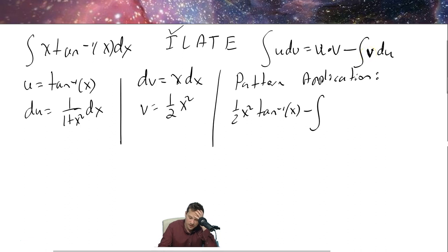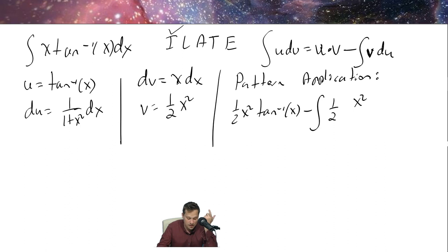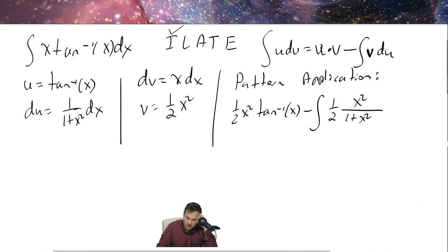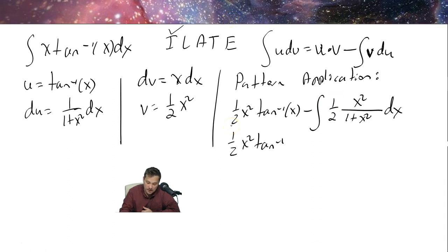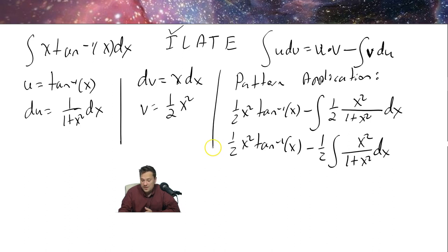For the v du integral: v is one-half x squared and du is 1 over (1 + x²) dx. We can place the constant one-half outside the integral, giving us: one-half x squared tan inverse of x minus one-half times the integral of x squared over (1 + x²) dx.